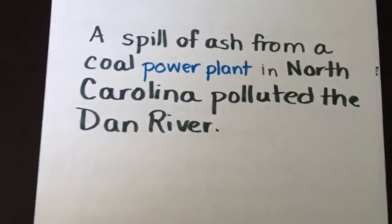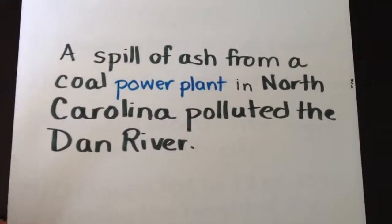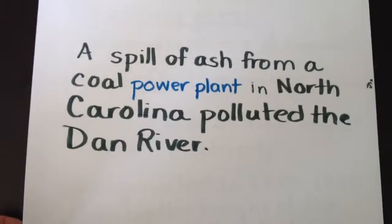For example, a spill of ash from a coal power plant in North Carolina recently polluted the Dan River and is threatening water supplies in Virginia.